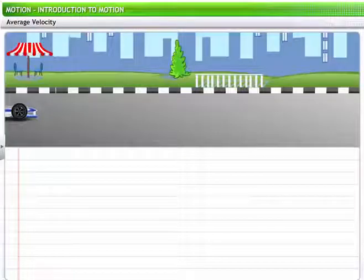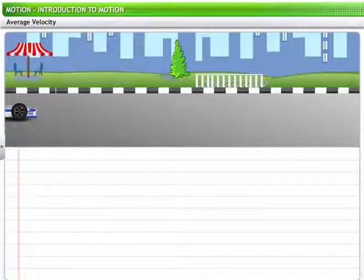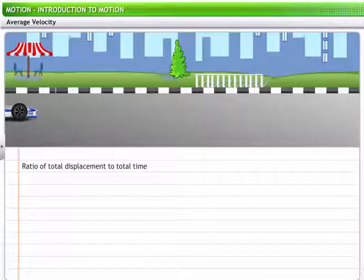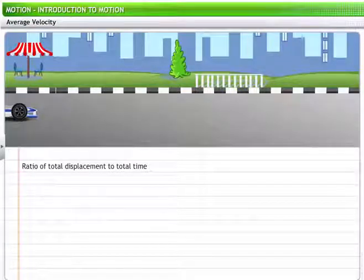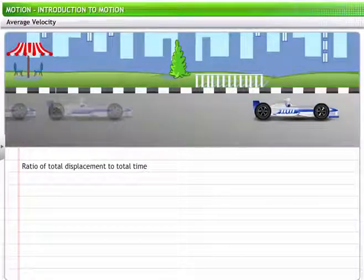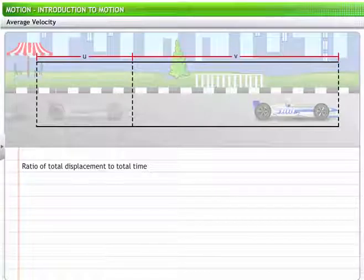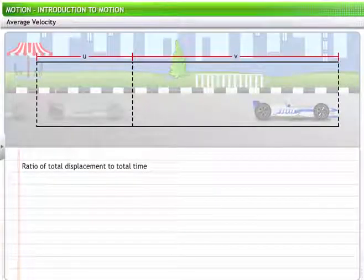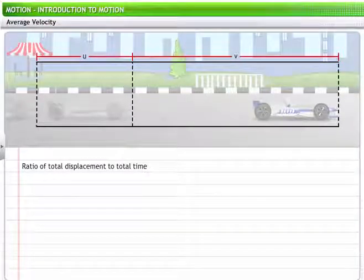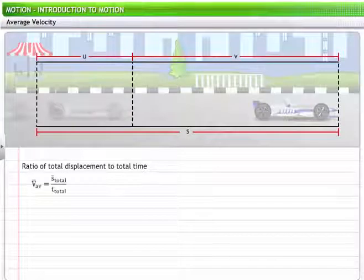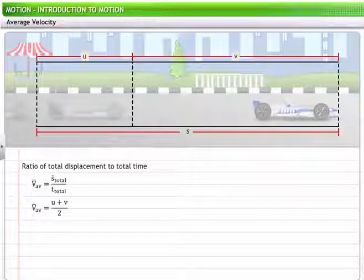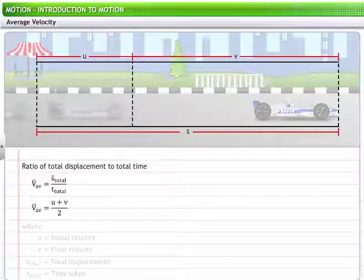Like average speed, you can calculate the average velocity of an object having non-uniform motion. Average velocity is defined as the ratio of the total displacement to the total time taken. When a body is moving with variable velocity for T total time duration, U and V are the magnitudes of its initial and final velocities, during which it has a total displacement, that is, S total. The average velocity of the body is the average of U and V, that is, it is half the sum of initial and final velocities.